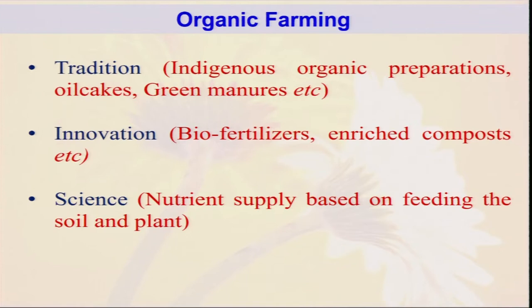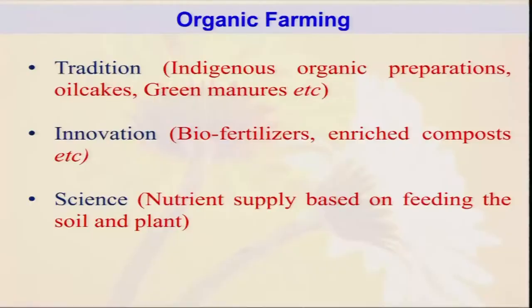Organic farming can be an amalgamation of three things: tradition, innovation, and science. Tradition refers to our old traditional knowledge — how to use organic manure, how to use FYM, what is the role of cow urine — our forefathers knew all this. This technology they applied is not superstition; there is too much knowledge and science behind it. Second is innovation — nowadays we have enriched compost, vermicomposting technology, biofertilizers like rhizobium and phospho-solubilizing bacteria. Third is science — we now know for a particular crop how much nutrient is needed, what season, what spacing, which variety. By proper amalgamation of tradition, innovation, and science, we can promote organic farming substantially in India.